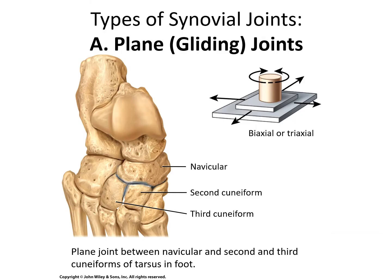In a gliding or plane joint, bones slide across each other in a single plane. The example given is the tarsals — the bones that make up the ankle — they don't move a whole lot but they can slide past each other, and there may be a bit of rotation as well. Another example is the joint between the manubrium and the clavicle — there is a synovial joint there with a little gap and fluid between the two bones, allowing some slippage.